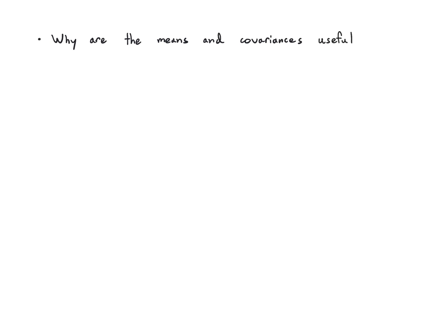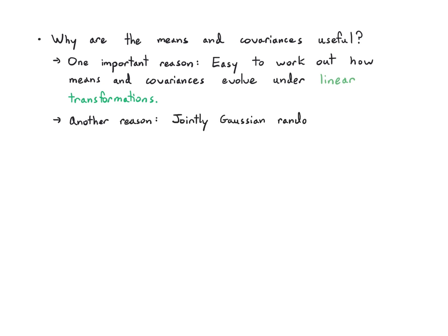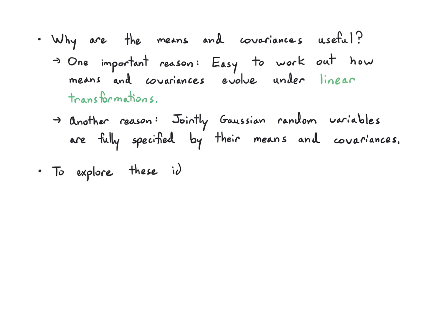Why are means and covariances so useful? One reason is that it's pretty easy to work out how they evolve under linear transformations. Another reason is that if we're dealing with jointly Gaussian random variables — which play an important role in many applications and which we'll use a lot in this course — they are fully specified by means and covariances. So that's really all we need.